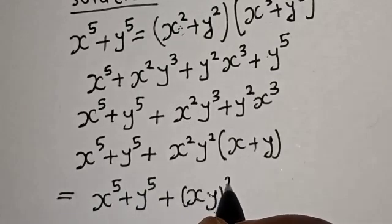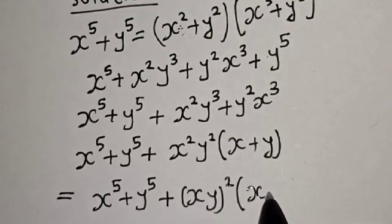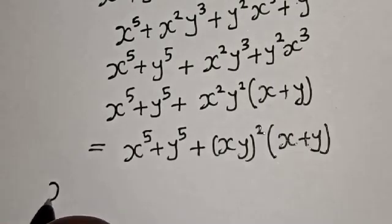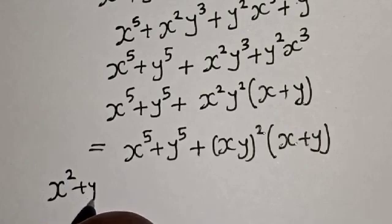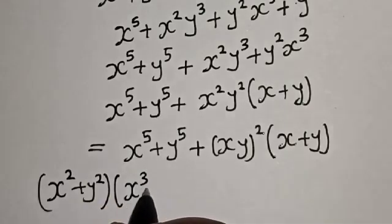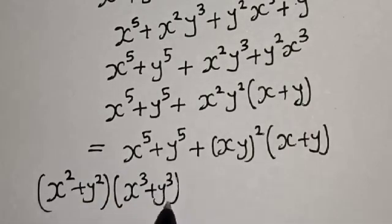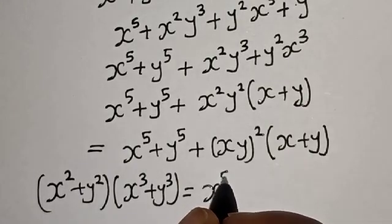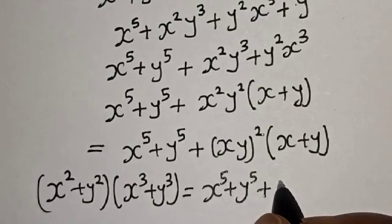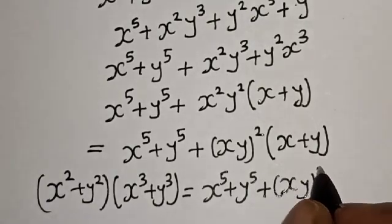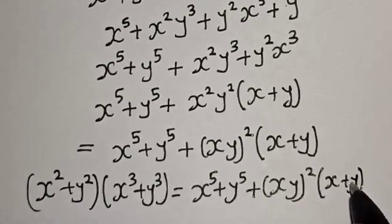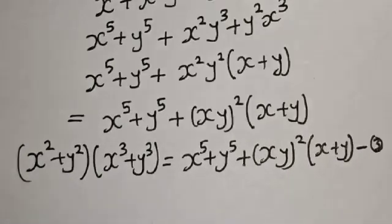So s squared plus y squared, multiplied by s raised to power 3 plus y to the power of 3, is equal to s raised to power 5 plus y raised to power 5 plus x·y squared multiplied by x plus y. Let's call this equation 3.